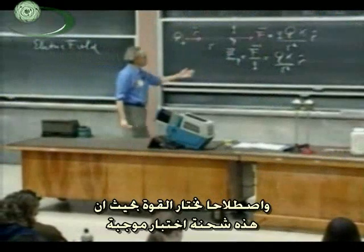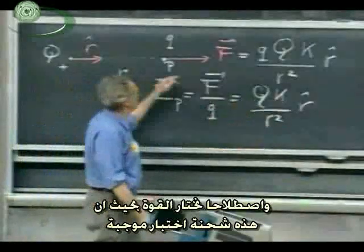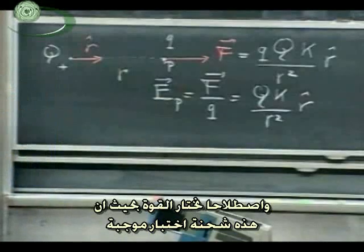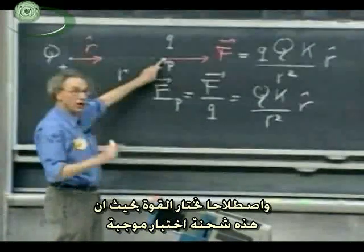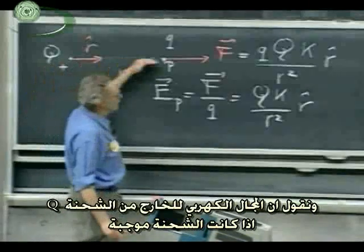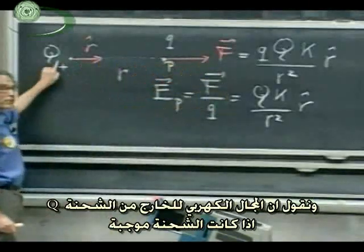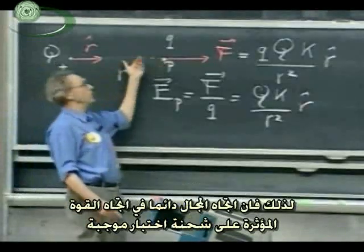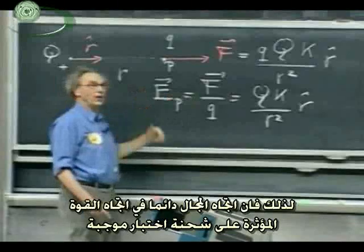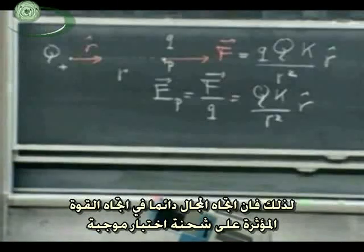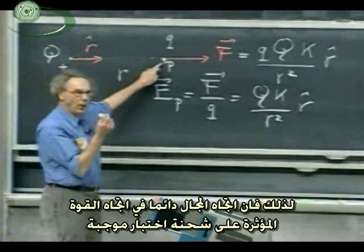And by convention we choose the force such that if this is a positive test charge, then we say the E field is away from Q if Q is positive. If Q is negative, the force is in the other direction and therefore E is in the other direction. So we adopt the convention that the E field is always in the direction that the force is on a positive test charge.